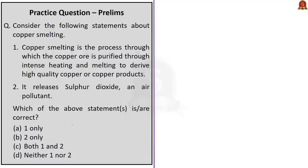The next question is about copper smelting. First statement: copper smelting is the process through which copper ore is purified through intense heating and melting to derive high quality copper and copper products — this is correct. Smelting is a process by which a metal is obtained from its ore by heating beyond the melting point in the presence of oxidizing agents like air or reducing agents such as coke. Second statement: it releases sulfur dioxide, an air pollutant — this is also correct because most copper ores are sulfur-based and when smelted they release sulfur dioxide into the air, causing harmful effects. The correct answer is option C: both one and two.